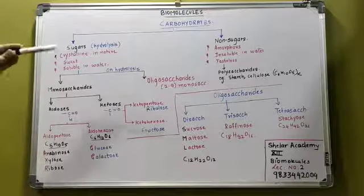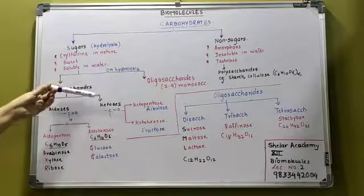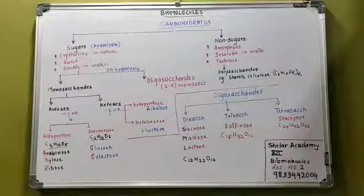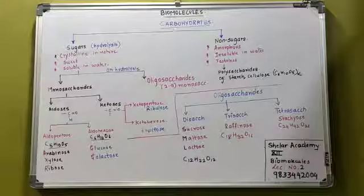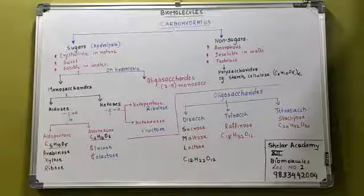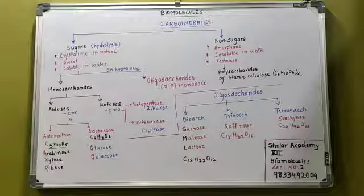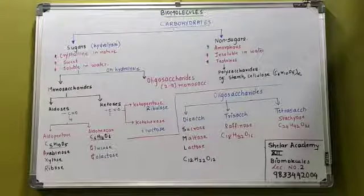Now we go for the non-sugars. Non-sugars are classified as polysaccharides. They yield many monosaccharide units on hydrolysis and are called polysaccharides. Examples of polysaccharides are starch, cellulose, and dextrin. Their formula is written as a polymer (C6H10O5)x. So that is the classification of the carbohydrate. That is all for this lecture today.